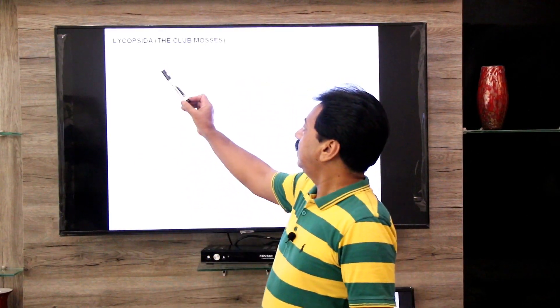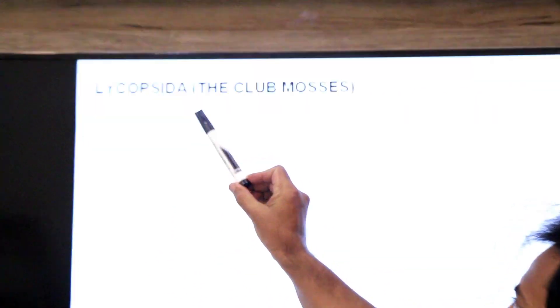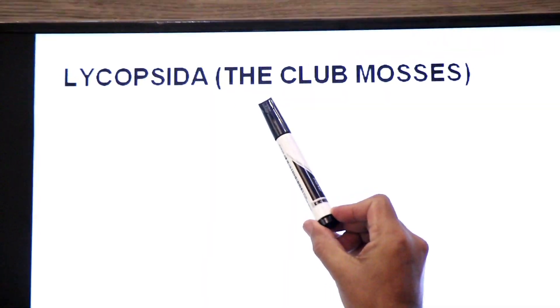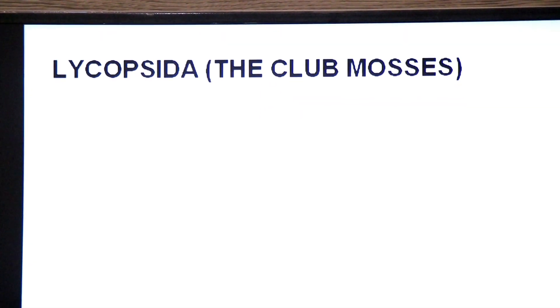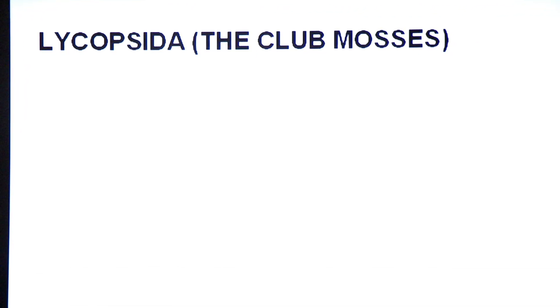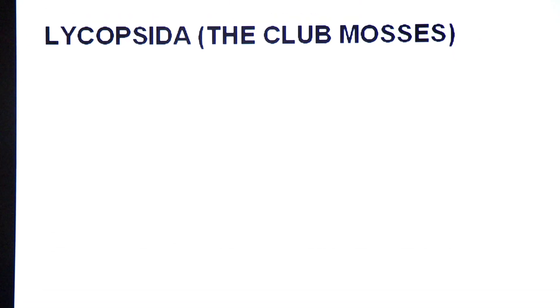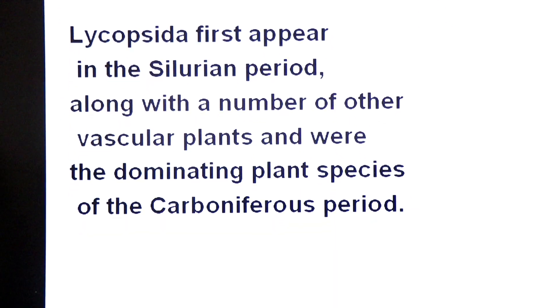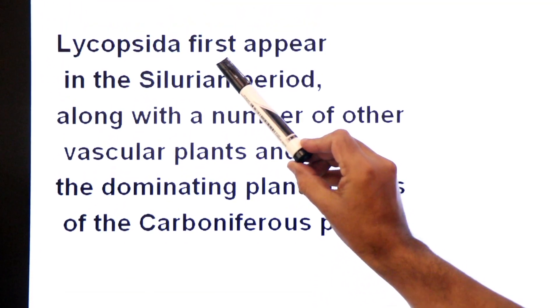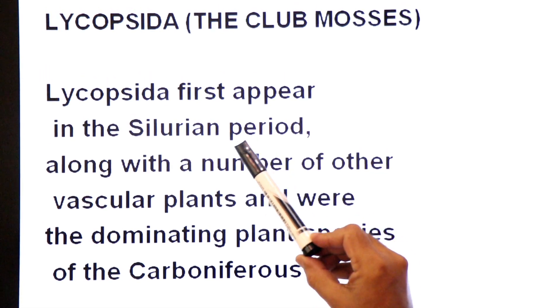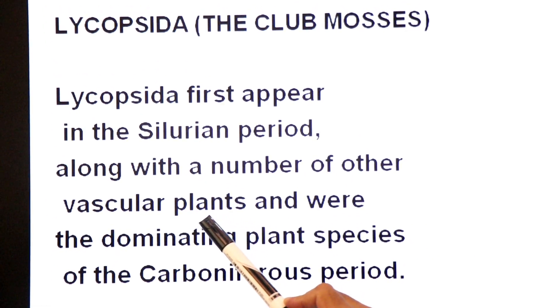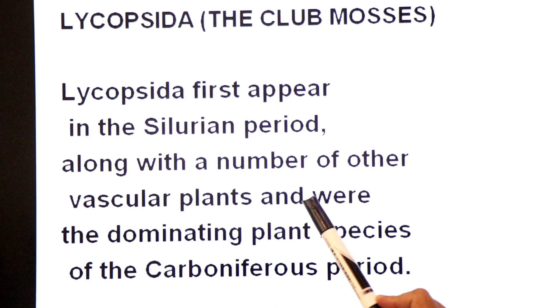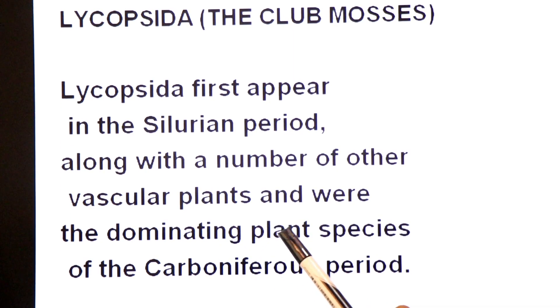Assalamu alaikum, namaste dear students. Today we are going to another class of vascular plants — Class Lycopsida, whose members are commonly known as club mosses. Let's first see in which period Lycopsida appeared. Lycopsida first appeared in the Silurian period along with a number of other vascular plants.